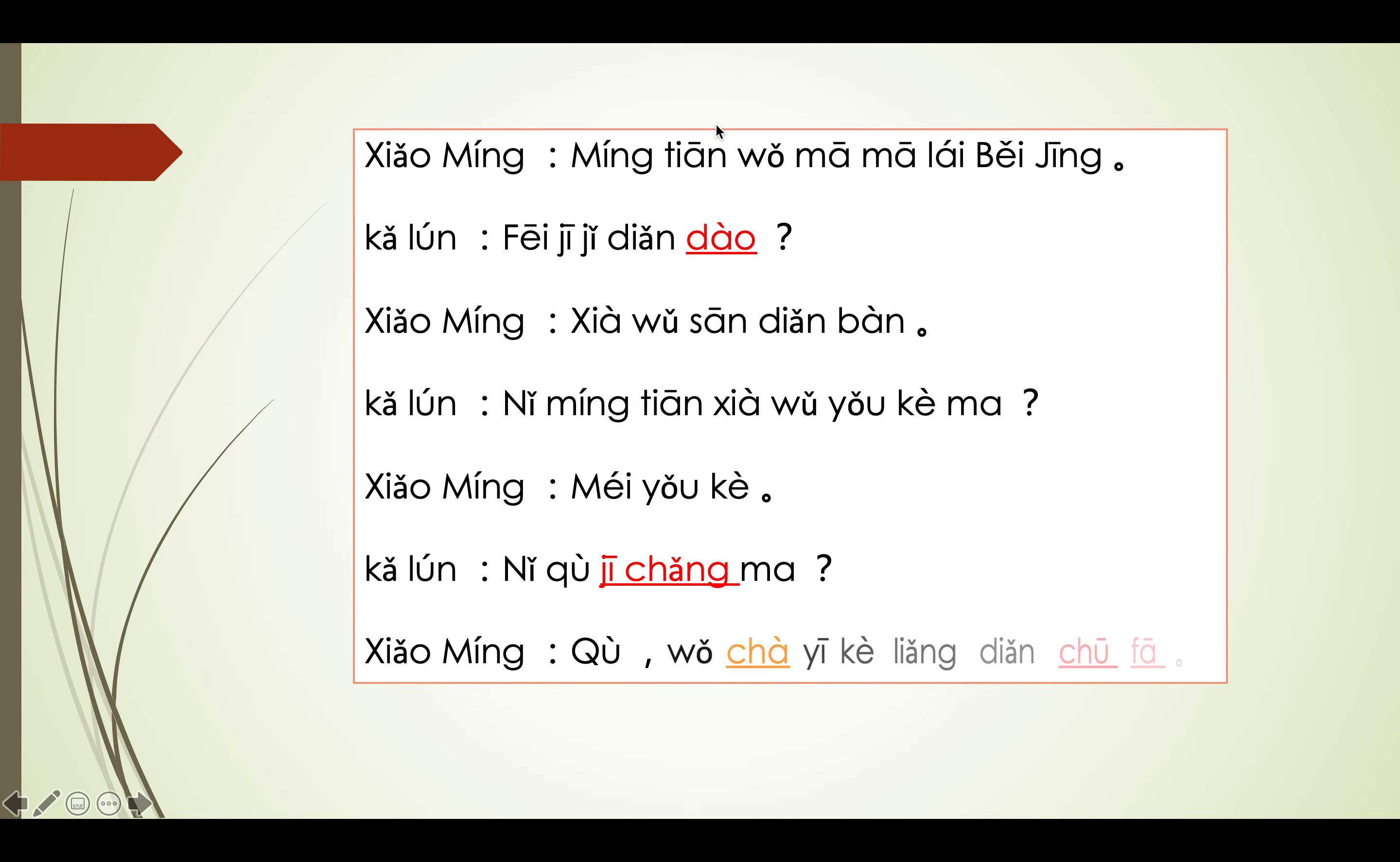First, 到, 到 means arrive. For example, 我到安塞了, I arrive in 安塞. Next, 机场, you know 飞机 means plane, so 机场, the place for parking plane is airport.